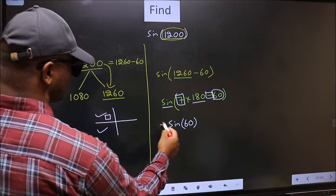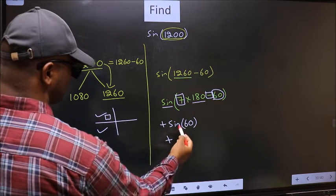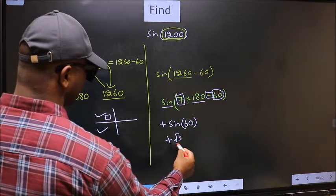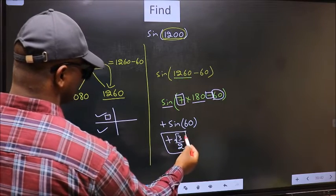So we should put plus. So plus sin(60°) is √3/2. This is our answer.